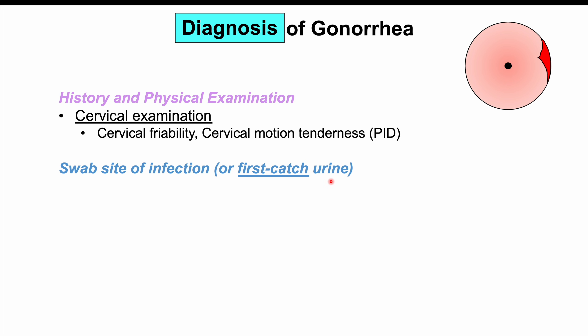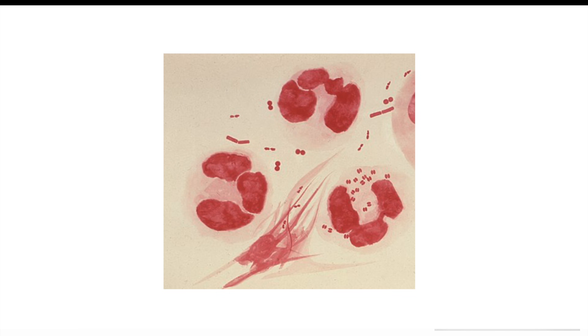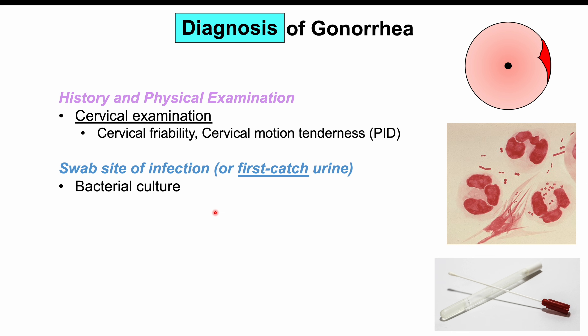First-catch urine — the first portion of urine voided — is used as a sample rather than midstream urine. Bacterial culture has been the gold standard for diagnosing gonorrhea, but has drawbacks: it takes 24–72 hours to grow the organisms, and difficulties in collecting, storing, and transporting samples can affect organism viability.